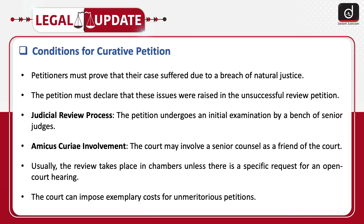The conditions for a curative petition are as follows: Petitioners must prove that their case suffered due to a breach of natural justice. The petition must declare that these issues were raised in the unsuccessful review petition. The petition undergoes an initial examination by a bench of senior judges. The court may involve a senior counsel as a friend of the court — amicus curiae. Usually, the review takes place in chambers unless there is a specific request for an open court hearing. The court can impose exemplary costs for unmeritorious petitions.